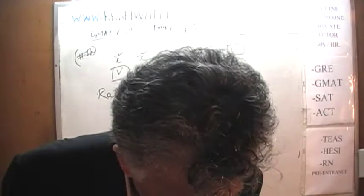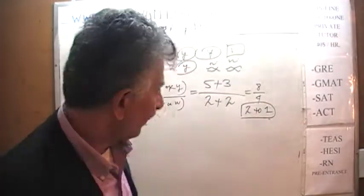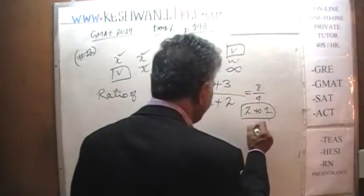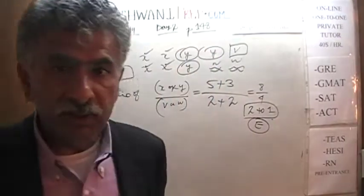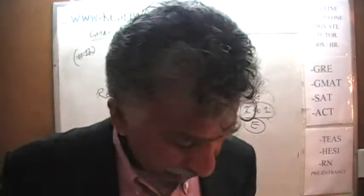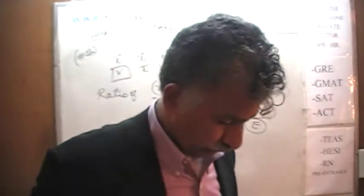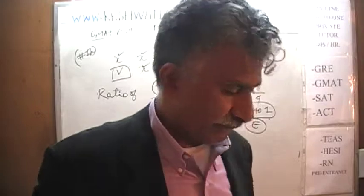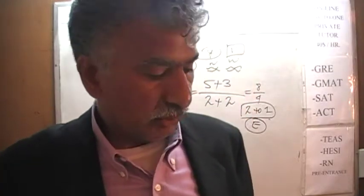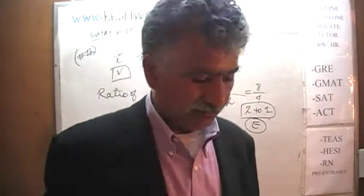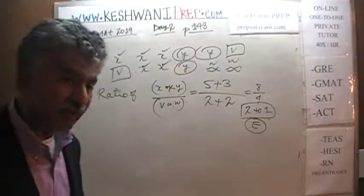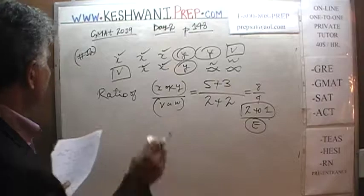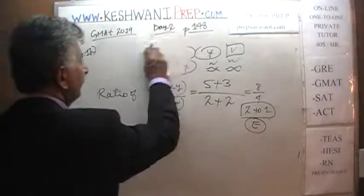The ratio is two to one. That was number twelve. Two to one would be answer choice E. Make sure you pay attention and pick two to one and not one to two. After having done all the work you don't want to end up being careless at the very end, because it happens to the best of us. Let's do the next one.